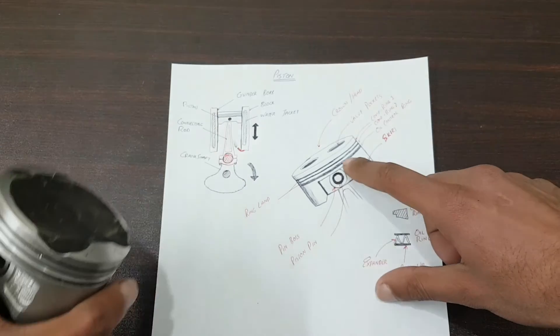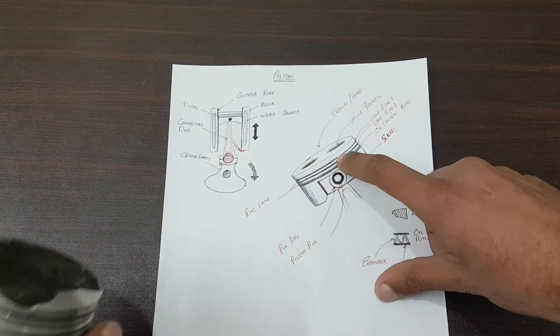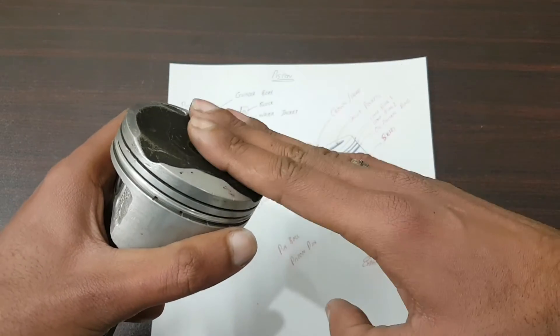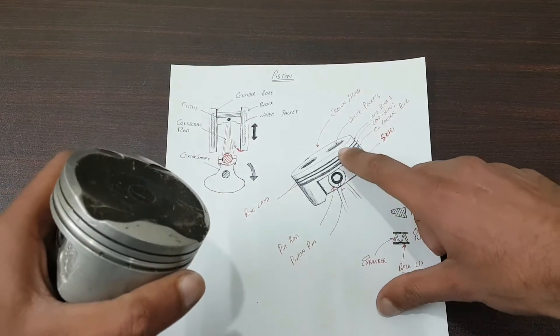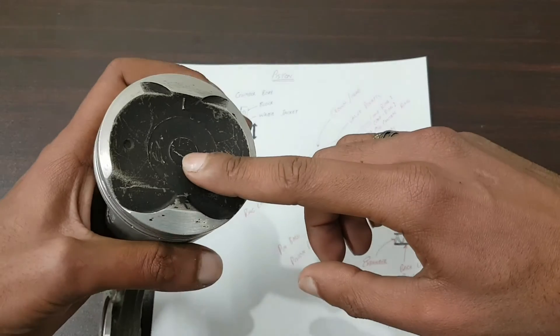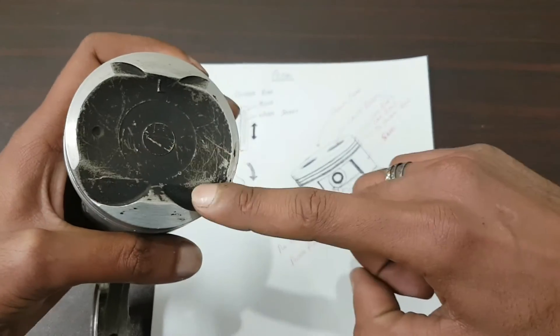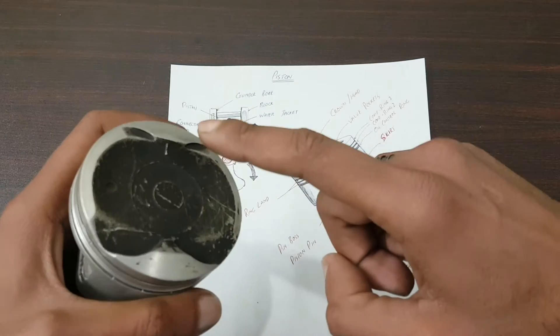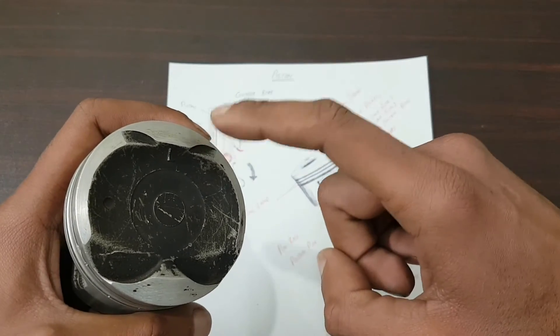Now if you look at the top, this area is known as the piston head or crown. Inside it you can see valve pockets - there are four valve pockets: one, two, three, four. Obviously the bigger pockets are for intake valves and the smaller ones are for exhaust valves.